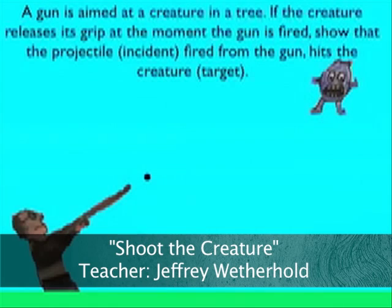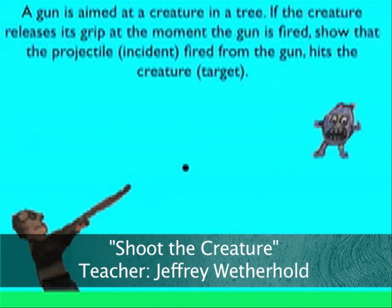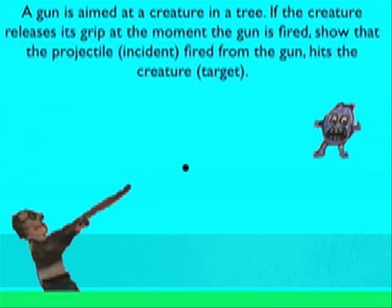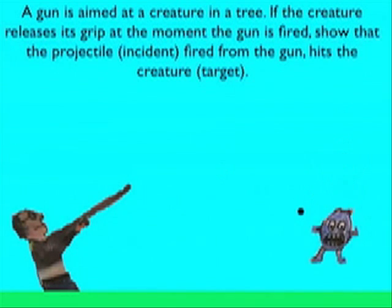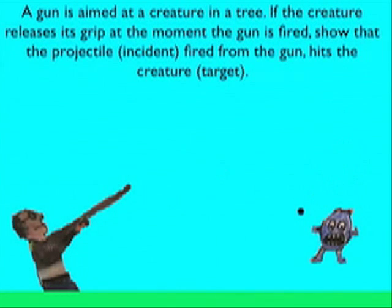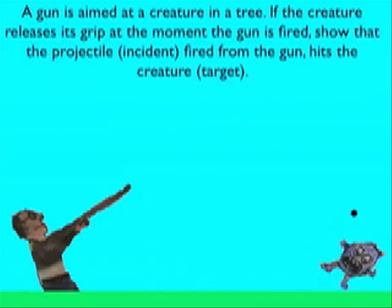A gun is aimed at a creature in a tree. If the creature releases its grip at the moment the gun is fired, show that the projectile fired from the gun hits the creature, the target.